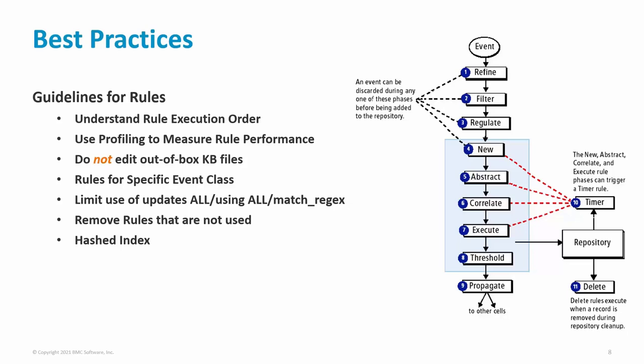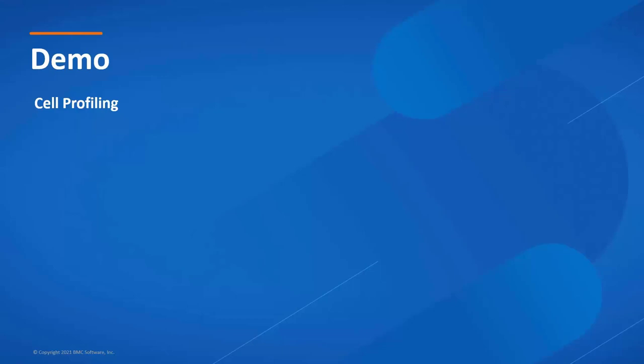The cell has an inbuilt profiler which can be enabled to measure the time spent running each rule. This can help troubleshoot high CPU issues and identify inefficient or CPU-intensive rules. Do not make changes to any out-of-the-box KB files; instead, take a copy, rename it, and edit the copy. Having efficient rules is key — where possible, write rules for specific event classes rather than the top-level class 'event'. The 'updates all' and 'using all' clauses, as well as the match_rejects function, can be resource intensive, so limit their use. If there are rules for integrations or configurations not in use, do not load them. For rules that query a large number of data instances or events, there can be a performance gain by rewriting them to use a hashed index.